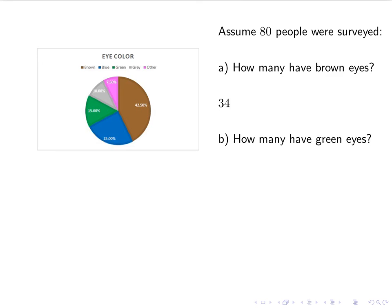How many have green eyes? So I go to my green, that's 15%. So what's 15% of 80? And again, we've learned how to do that. And the answer should be 12.